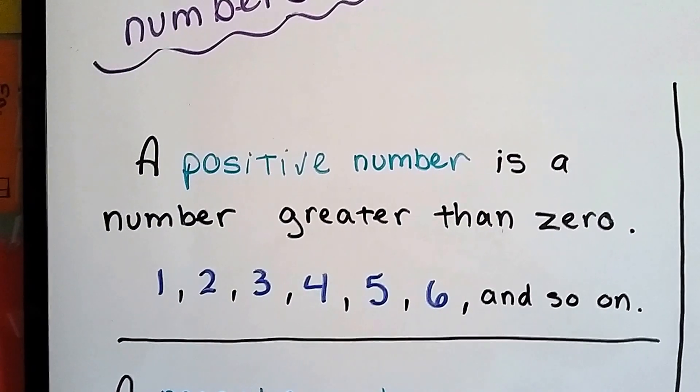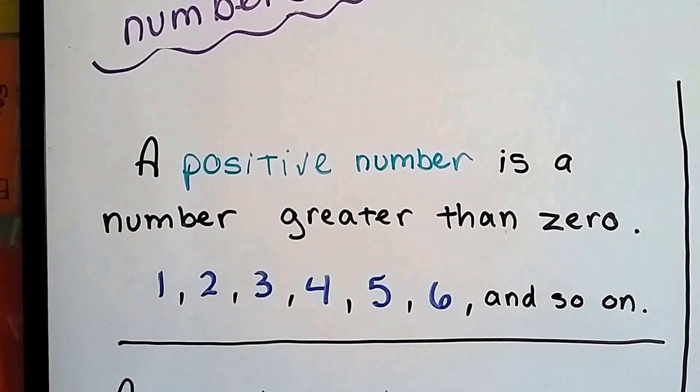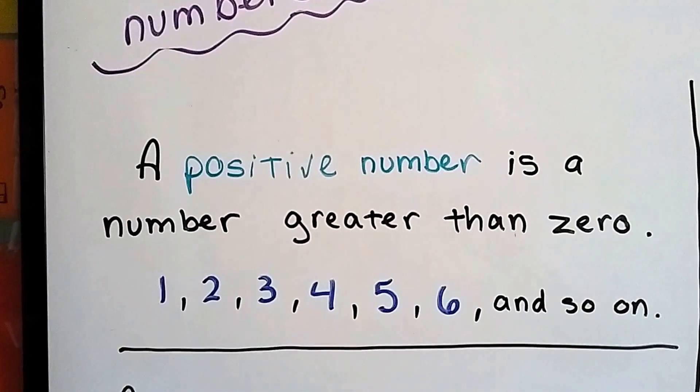A positive number is a number greater than zero. One, two, three, four, five, six, and so on, those are positive numbers.